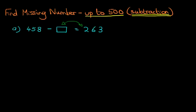So therefore, it will read like this. We've got the missing number here, and we've got 458 minus 263. We've just swapped those around.